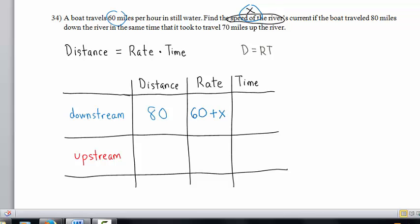We'll come back to the time in just a moment. The distance upstream is 70 miles. A boat going upstream is going against the river's current, so its speed is slowed by the speed of the river's current. The speed, therefore, of the boat going upstream is 60 miles an hour minus the speed of the river's current.